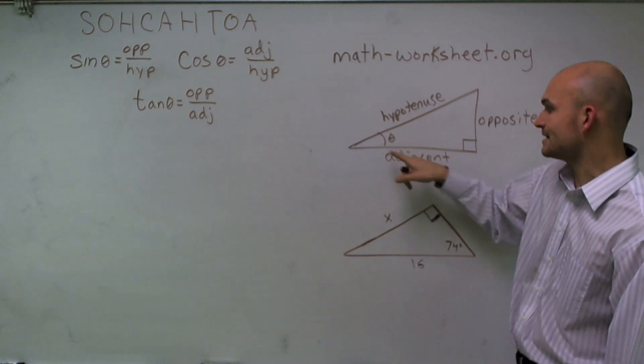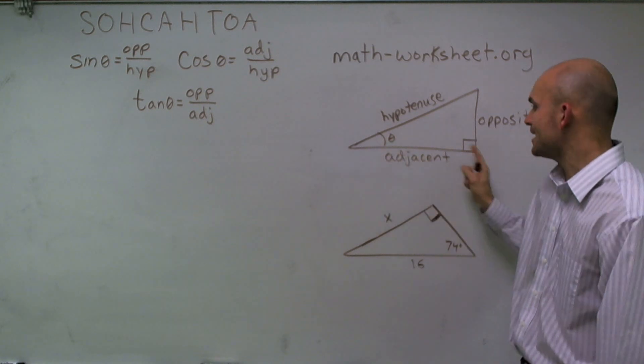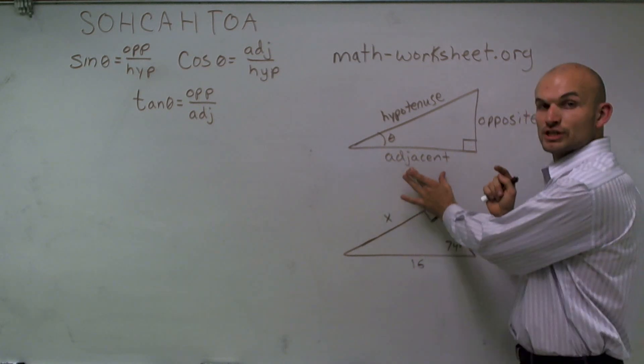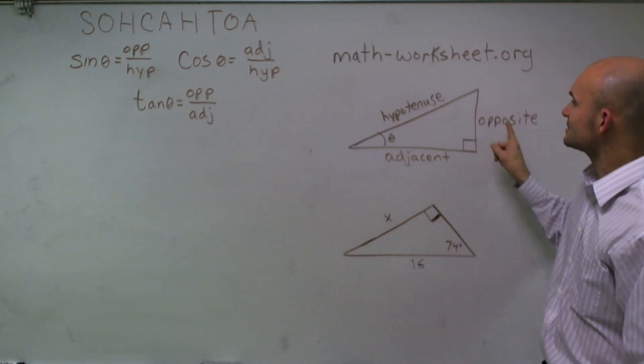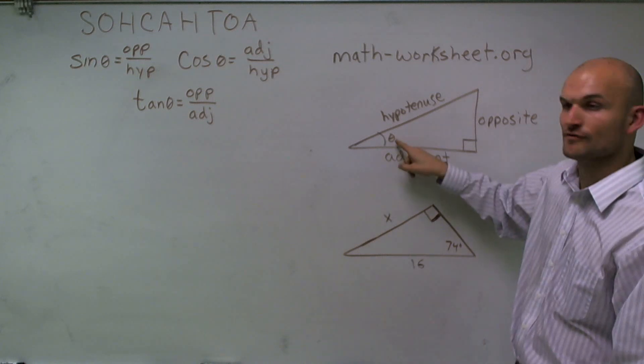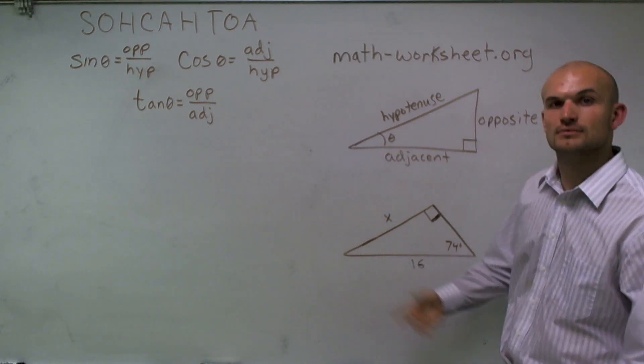The leg that connects your angle theta and your right angle is what we call the adjacent side. The side length that is opposite of your angle theta is what we call the opposite leg.